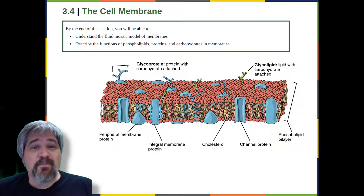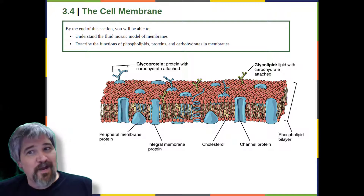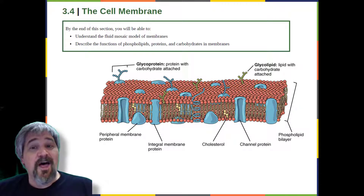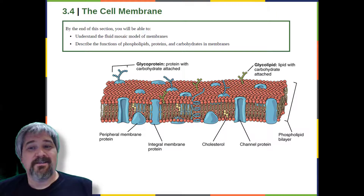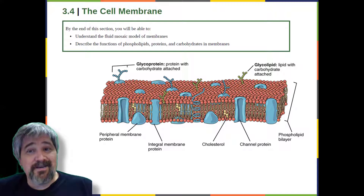A cell's plasma membrane defines the boundary of the cell and determines the nature of its contact with the environment. Cells exclude some substances, take in others, and excrete still others, all in controlled quantities. Plasma membranes enclose the borders of cells, but rather than being a static bag, they are dynamic and constantly in flux.